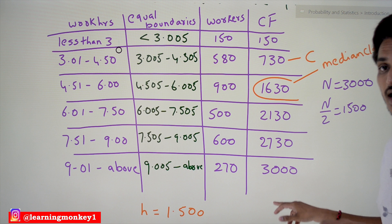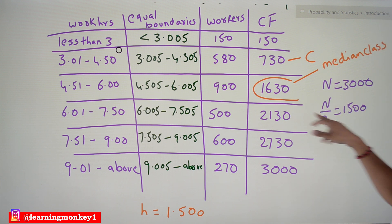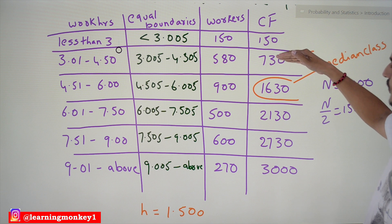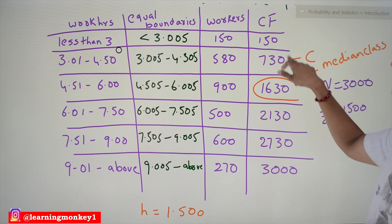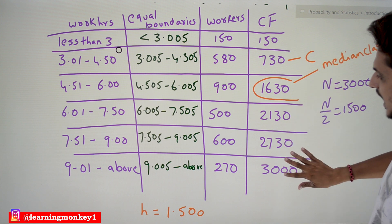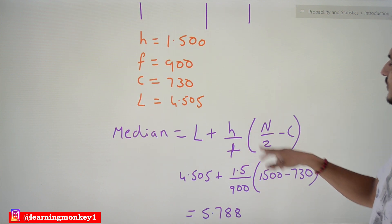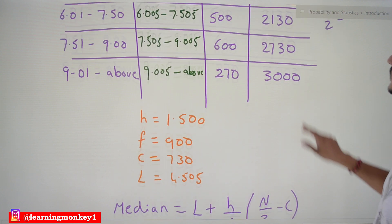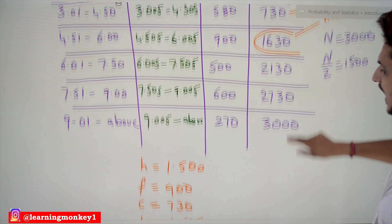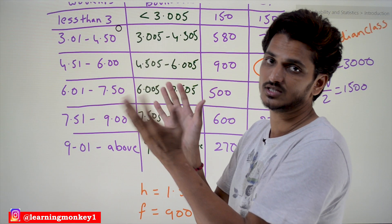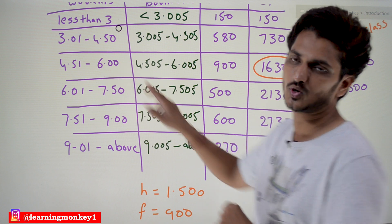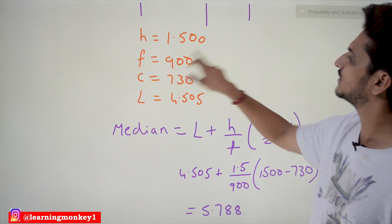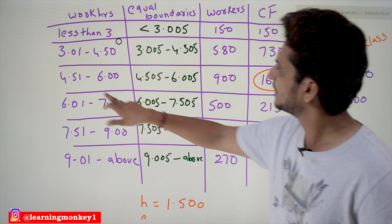First, you have to identify the median class. How do you identify the median class? N by 2 equals 1500. 1500 falls in this class, so this is the median class. The class before the median class gives us the C value — the cumulative frequency value before the median class is called C.